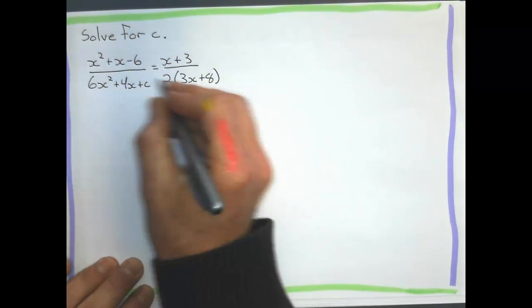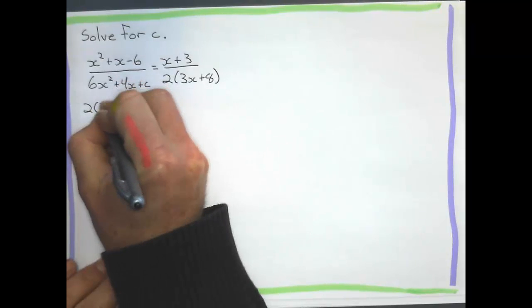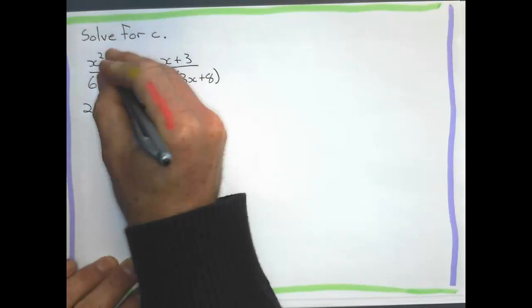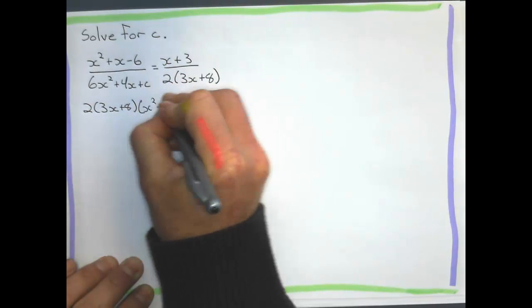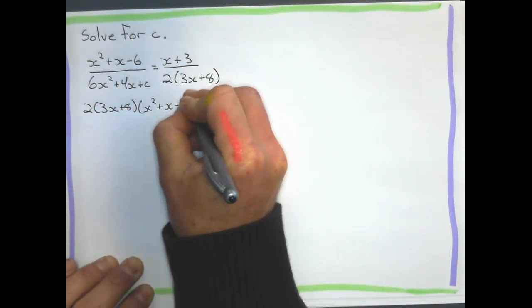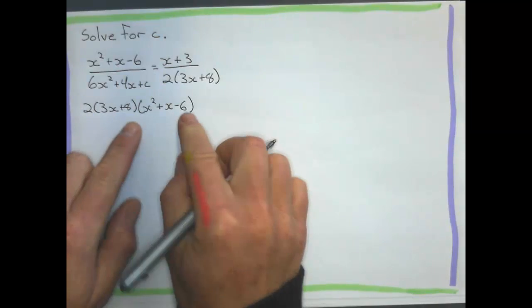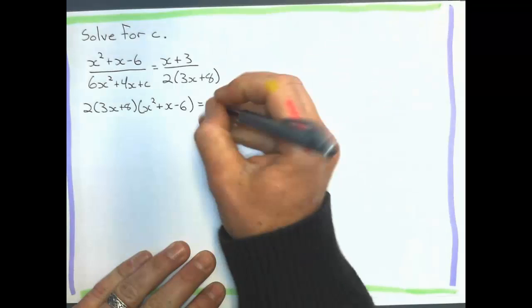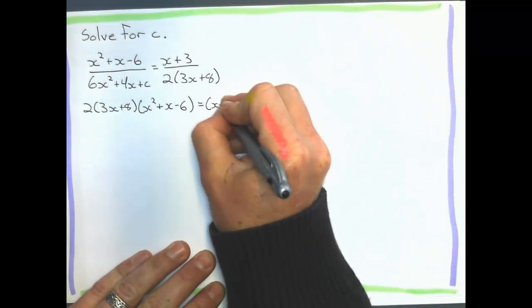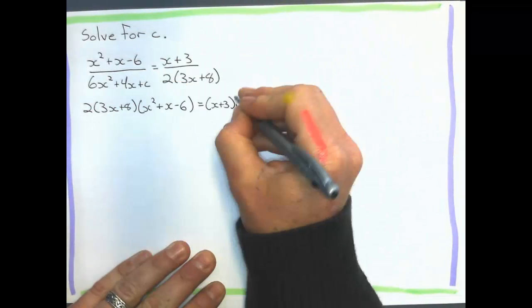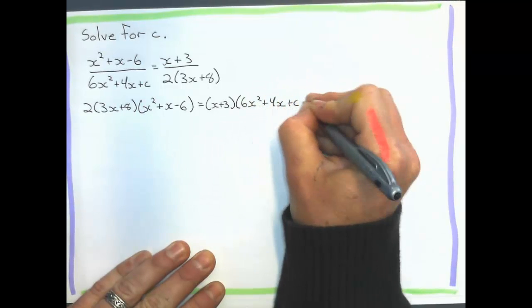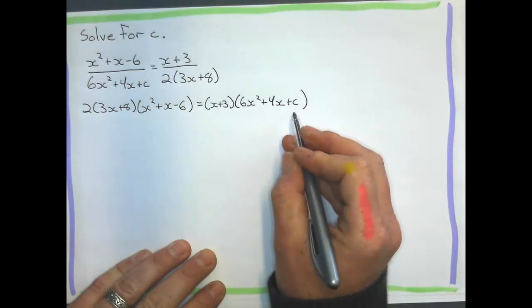So it's not too bad, so let's start that out. So 2 bracket 3x plus 8 is going to be multiplied to x squared plus x minus 6. I'm going to put that in brackets. And that's going to equal the product of these guys. Equals x plus 3 bracket times 6x squared plus 4x plus C. And there's that C that I'm going to try to solve for.